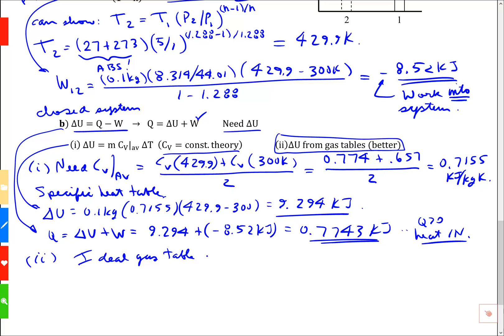The tables give u bar in kilojoules per kilomole. So we're going to have to convert. A conversion is that delta u is m times delta u bar divided by the molecular weight.